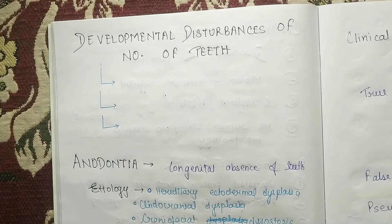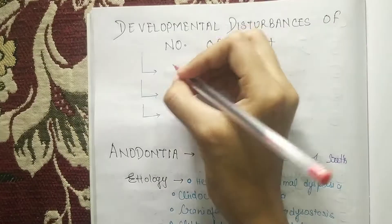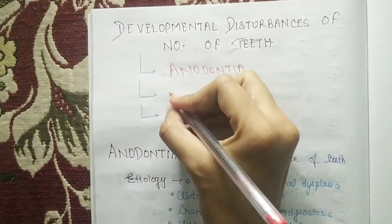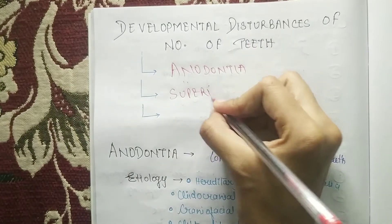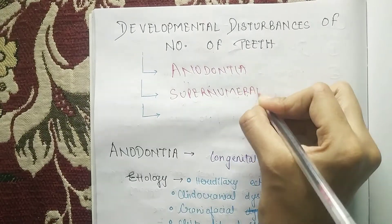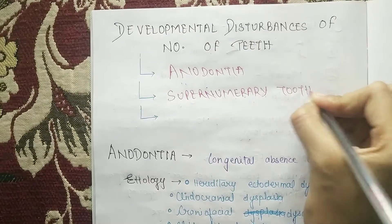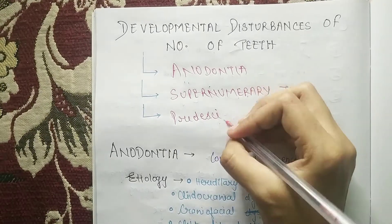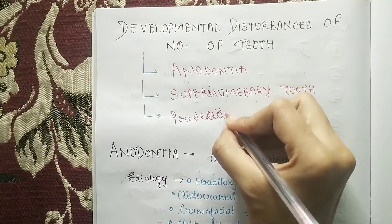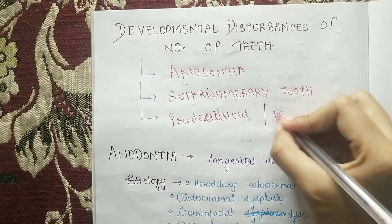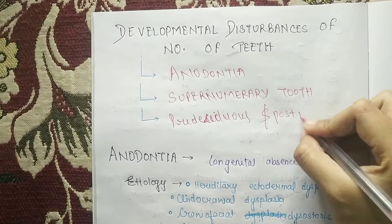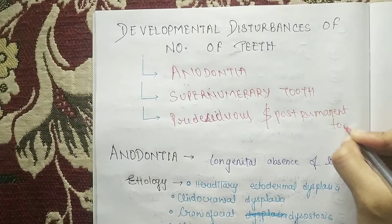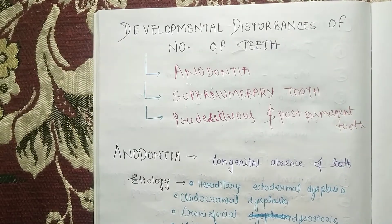We are going to study only three things. First is anodontia, second is supernumerary tooth, and third is pre-deciduous and post-permanent tooth. So we will study these three things. Coming to the first: anodontia.